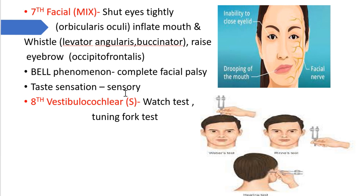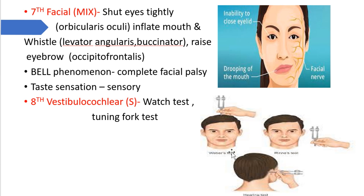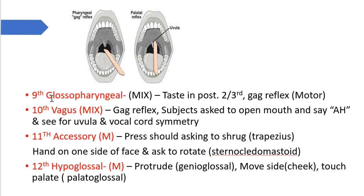The eighth nerve — vestibulocochlear — is tested using the watch test: bring a watch near the patient's ear and compare with your own hearing. Tuning fork tests are also performed: the Weber test checks for equalization on both sides, and the Rinne test discriminates between bone conduction and air conduction.